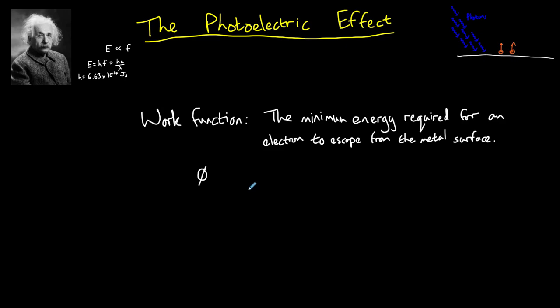If the photon provides more energy than the work function, this extra energy is transferred to the electron's kinetic energy. If the photon has less energy than the work function, the electron simply does not escape from the metal. The work function is a property of the metal and it varies between different materials.